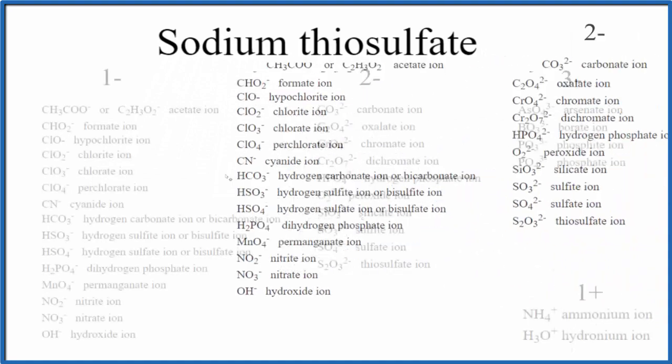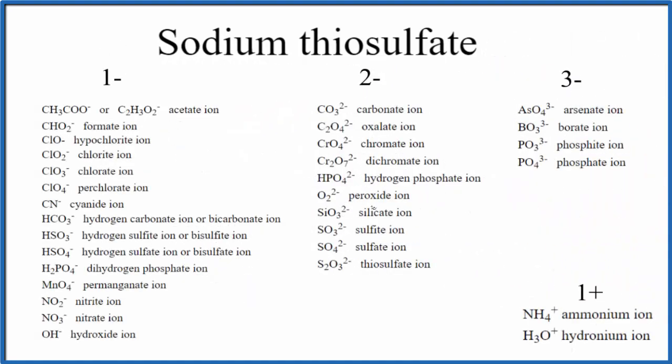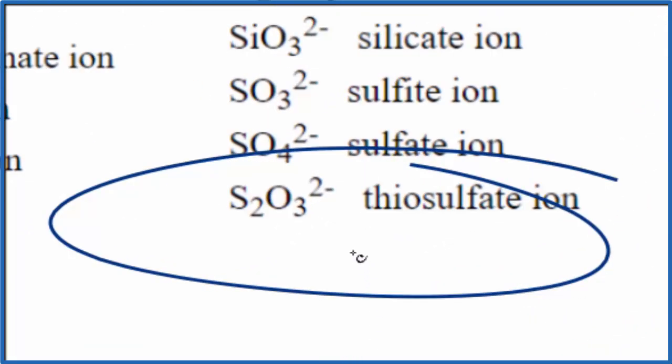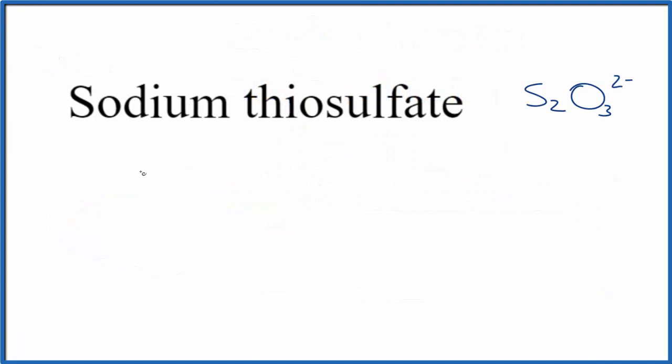We go down and thiosulfate right here, S2O3 2-minus. Let's write that up here. So we have sodium, that's a metal, so we'll just write Na here, and then we have this group of non-metals.